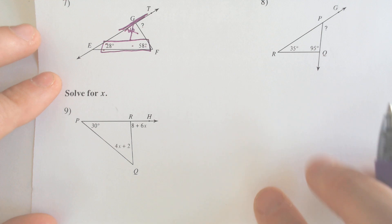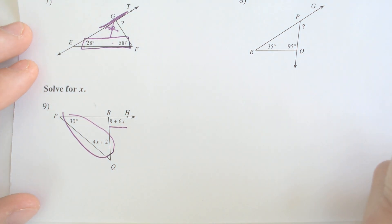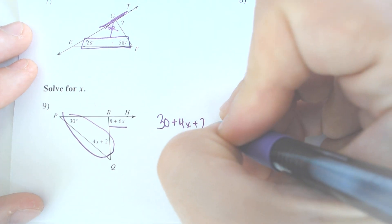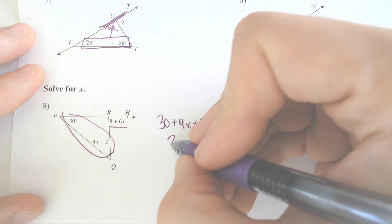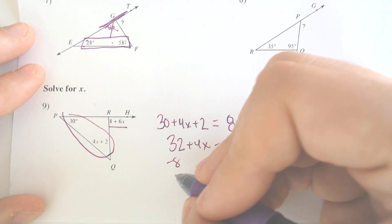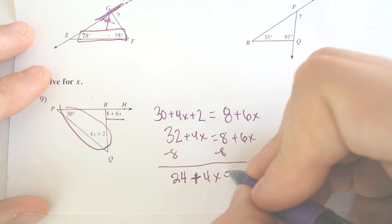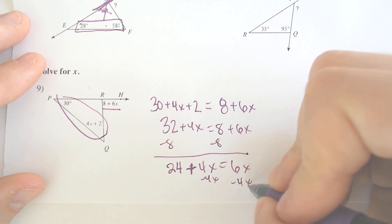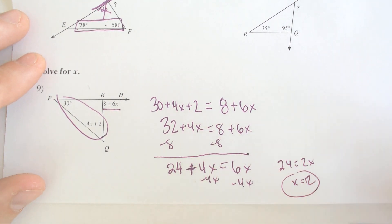The exterior angle is very useful once you start throwing variables in. These are the two interior, they must add to the one exterior on the outside of the triangle. We got 30, we got 4x plus 2, they must add together to equal 8 plus 6x. If we combine like terms we get 32 plus 4x is equal to 8 plus 6x. Subtract the 8 from both sides, we end up with 24 plus 4x is equal to 6x. Subtract the 4x over, we end up with 24 is equal to 2x. So x must be equal to 12.